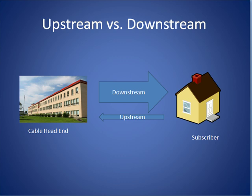In today's modern cable systems, we define the downstream direction as the data path from a cable head end towards the subscriber and the upstream direction from the subscriber back to the cable head end.